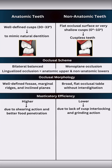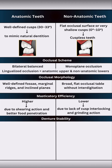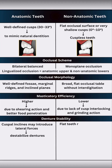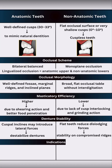Flat teeth crush the food rather than slice it. Cuspal inclines in anatomic teeth may introduce lateral forces that can destabilize the dentures. Flat occlusion in non-anatomic teeth reduces these dislodging forces, providing more vertical stability on compromised ridges.